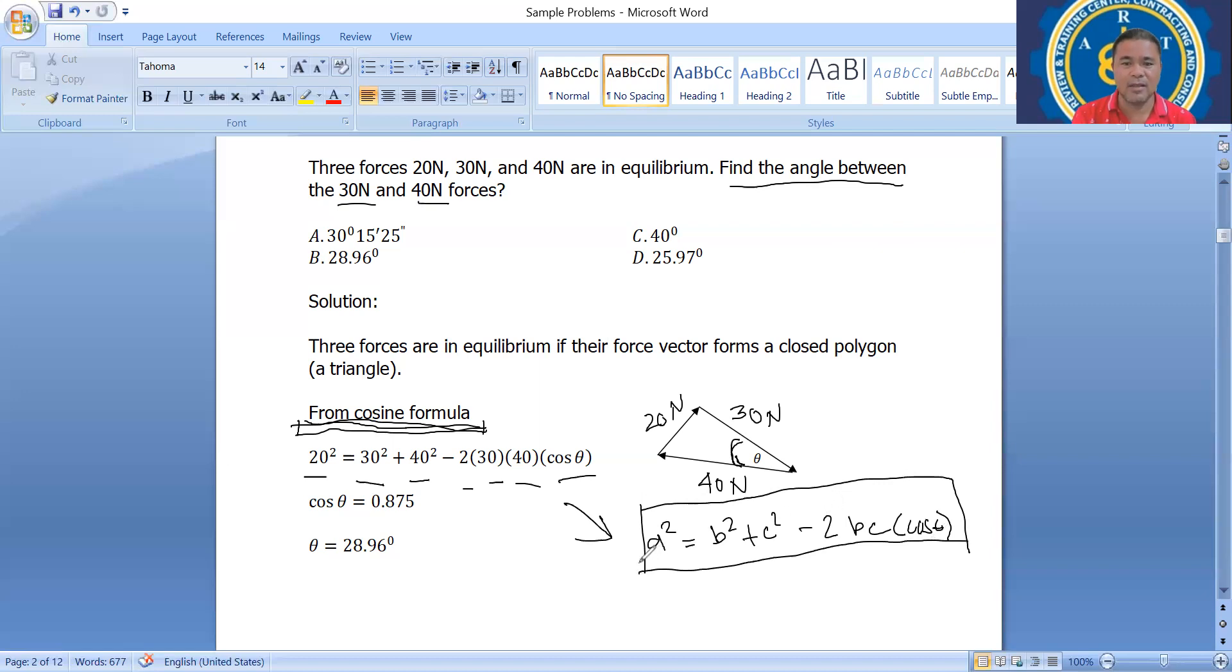Study back the basics. So we have cosine theta equals to 0.875, then theta is equals to 28.26 degrees. So meaning the angle between the 30 Newton and 40 Newton is equals to 28.26 degrees. Thank you very much.